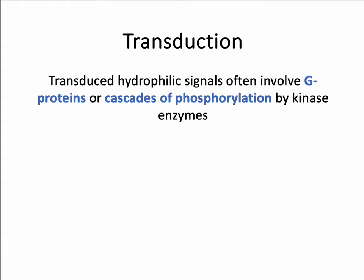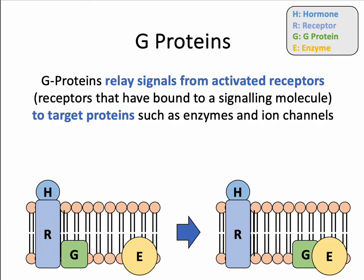There are two forms of transduction — the passing of the signal into the intracellular space. These involve either G proteins, or a cascade of phosphorylation by a type of enzyme called kinase, and we'll look at both one at a time. G proteins are proteins that act as a relay service between an activated receptor — where the extracellular hydrophilic signal molecule has bound to the transmembrane receptor — and a target protein. As shown in green in the diagram, the G protein relays that message from the activated receptor to the target protein within the cell, which could be an enzyme or an ion channel, leading to some form of activation.